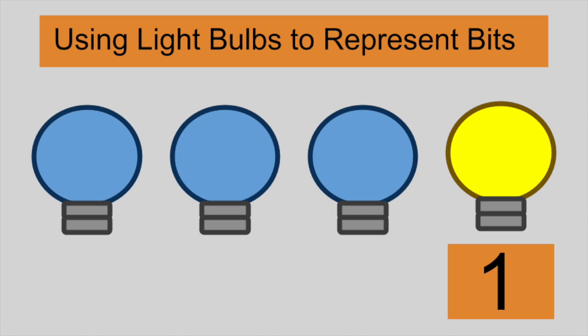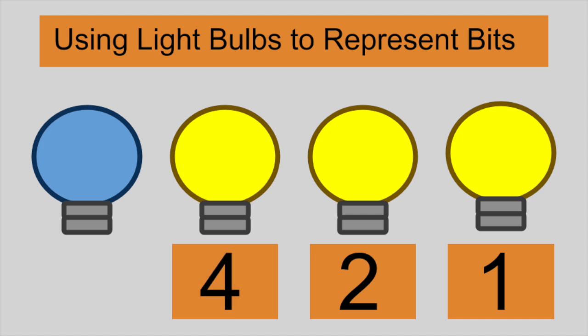Suppose each bulb represents a power of 2 when turned on. The rightmost bulb is 2 to the power of 0, which is 1. The next bulb over is 2 to the power of 1, which is 2. The next bulb after that is 2 to the power of 2, which is 4. And finally, the leftmost bit will represent 2 to the power of 3, which is 8.